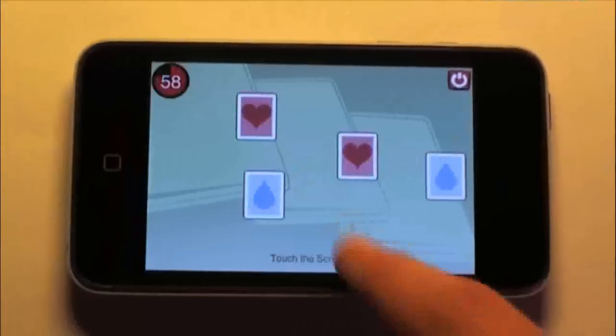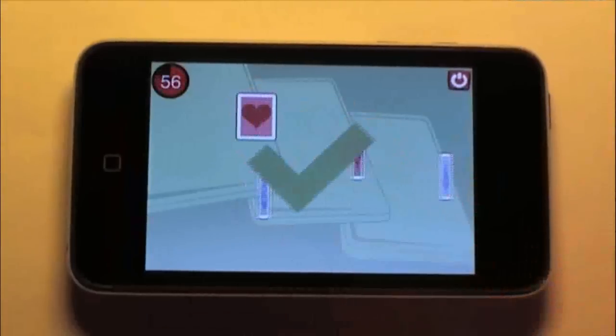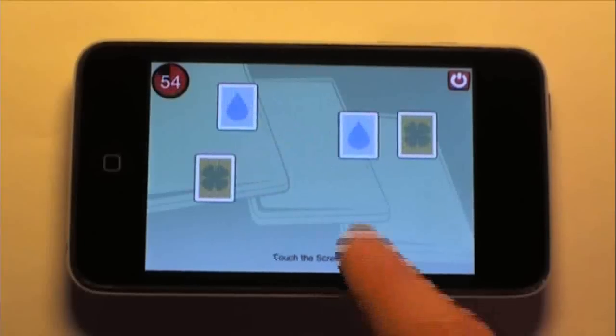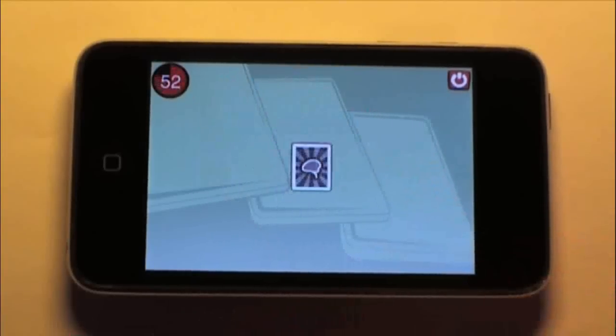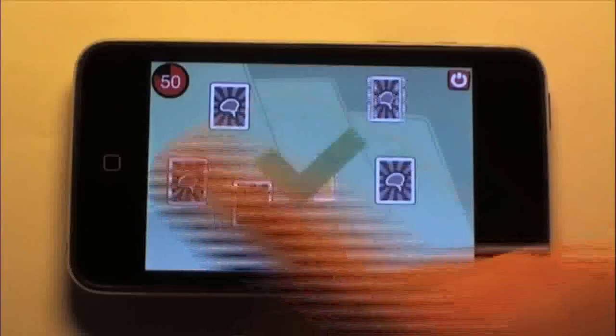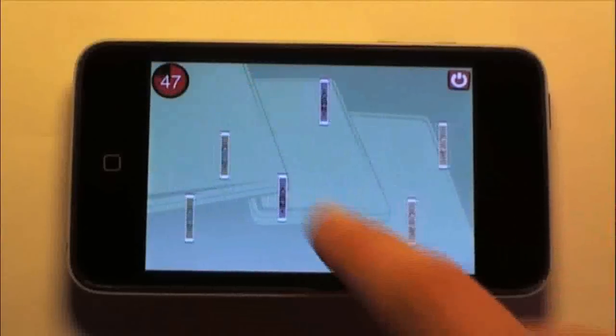You can also practice the minigames separately in the practice mode. The aim of each minigame is to complete as many rounds of a simple task as possible in 60 seconds. Each time you complete a round it gets slightly harder and your score is calculated from the number of rounds that you complete.